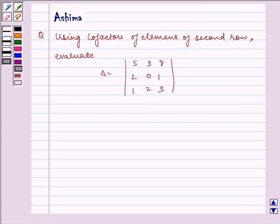Hello and welcome to the session. Let us understand the following problem today. Using cofactors of elements of second row, evaluate delta equals 5, 3, 8, 2, 0, 1, 1, 2, 3. Now let us write the solution.